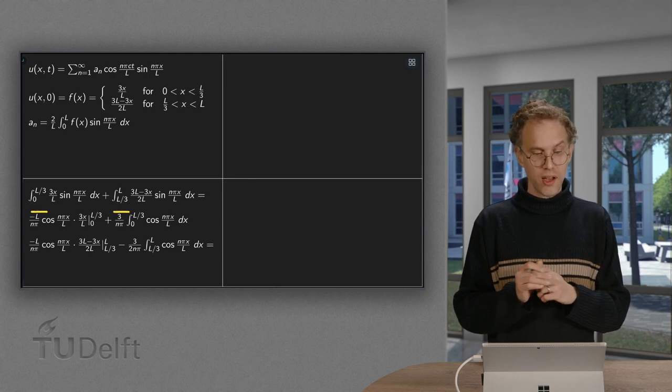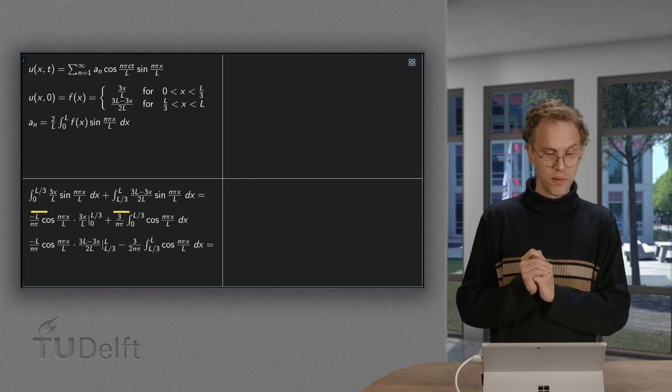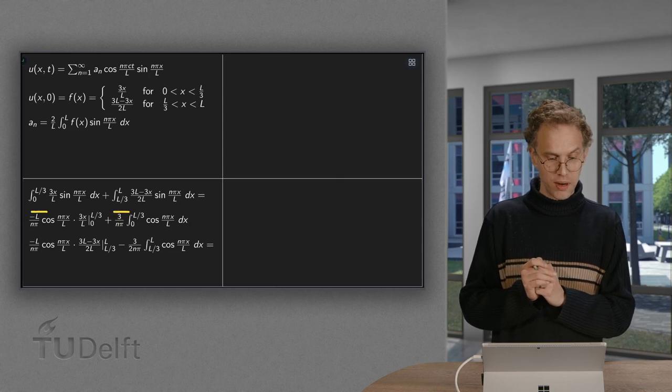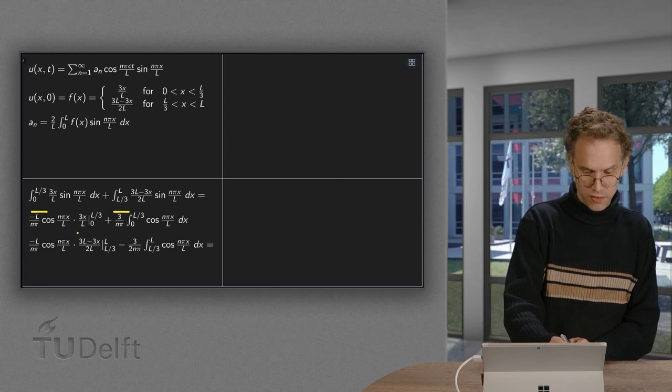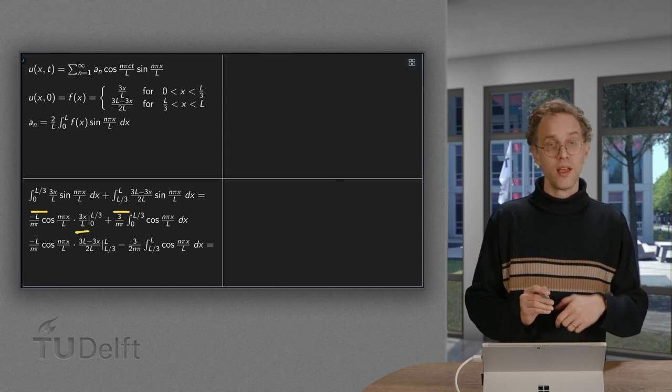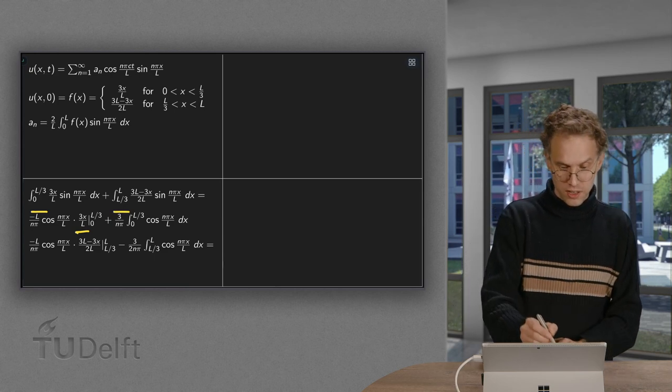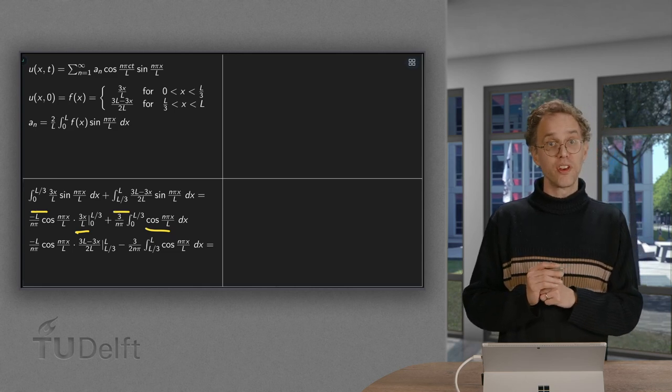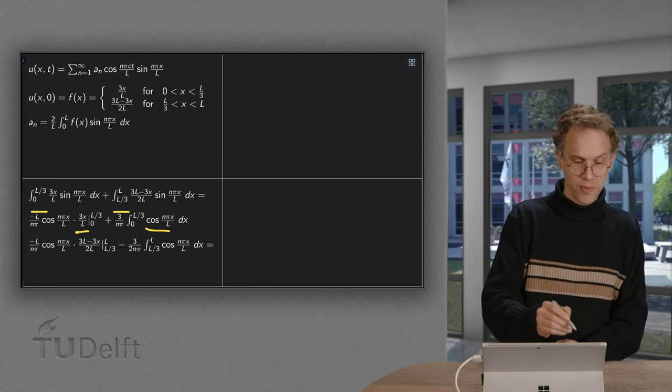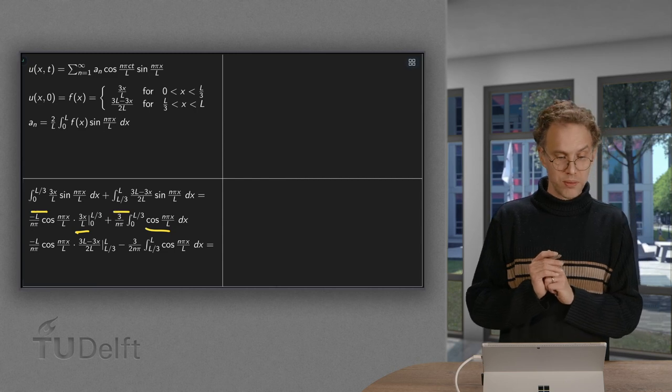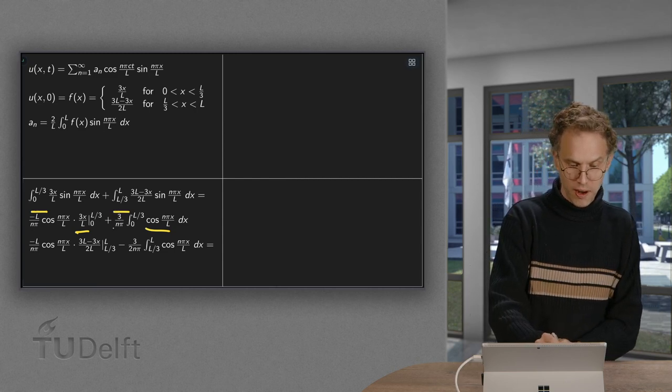Integrate the sine n pi x over L. Gives us a minus cosine n pi x over L times L over n pi times this 3x over L, which stays there. And then using integration by parts, so minus this cosine times the derivative of 3x over L, so times 3 over L. So that gives us 3 over L times L over n pi, so 3 over n pi.